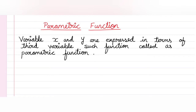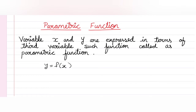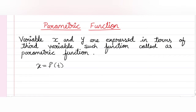Concept बहुत easy है। यहाँ पर कोई भी दो variables रहते हैं। अभी तक हमारे पास सिर्फ y = f(x) इस तरह का एक ही function था, लेकिन अब यहाँ पर x और y — ये दोनों एक और third variable में expressed किये जाएंगे। जैसे कि x = f(t) and y = g(t)। इस तरह के function को हम कहते हैं parametric function।